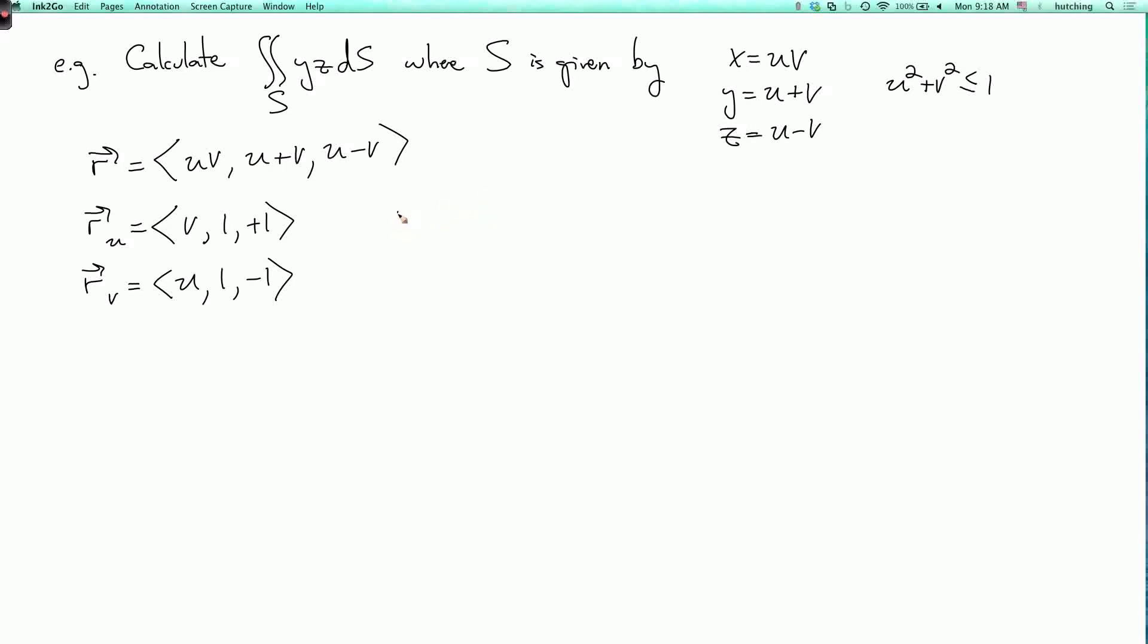Now the cross product, ru cross rv. The first term is this times this minus that times that, which is minus 2. The second term is this times this minus that times that, which is u plus v. So the absolute value of ru cross rv is the square root of 4 plus u plus v squared plus v minus u squared. And if I multiply this out, it simplifies a little bit to the square root of 4 plus 2 times u squared plus v squared.